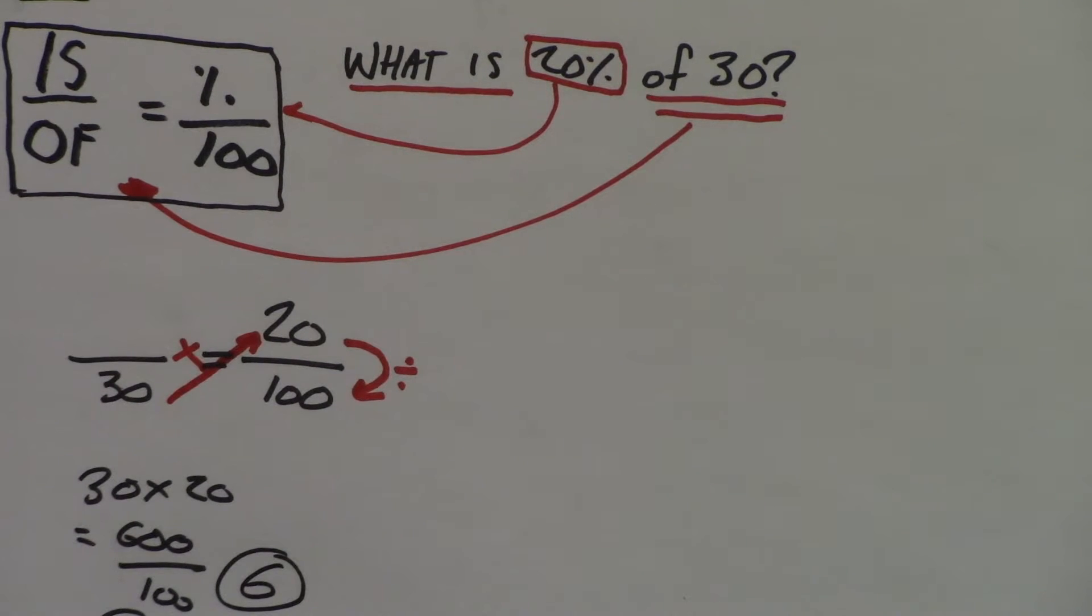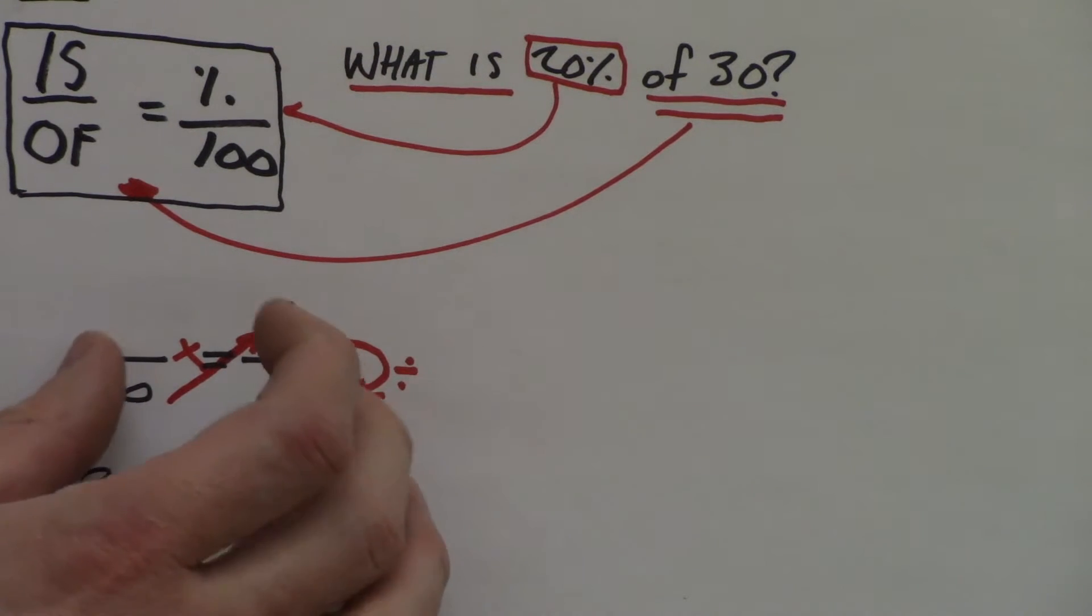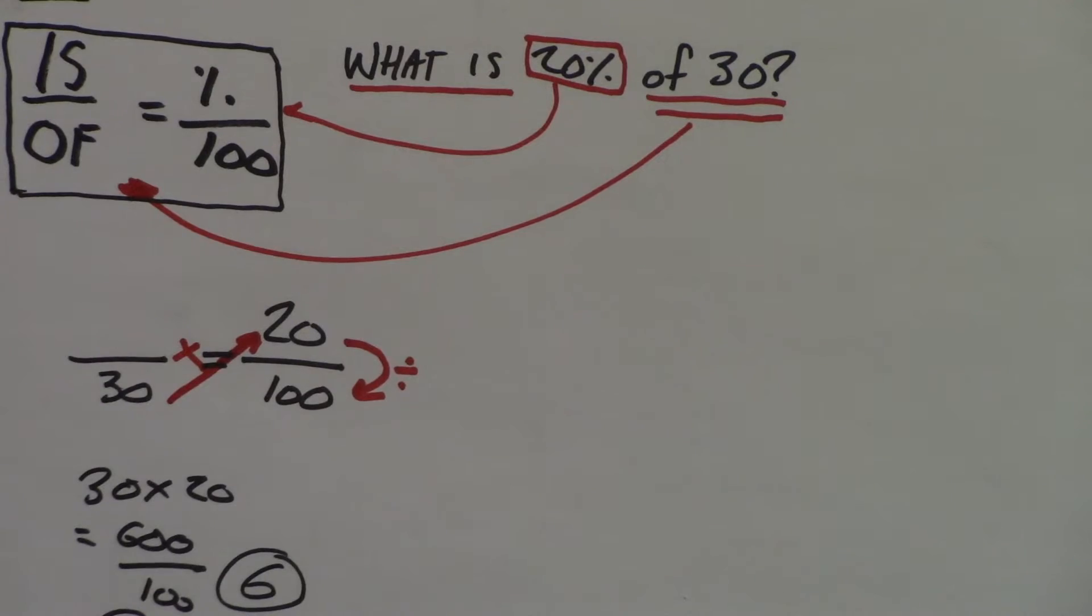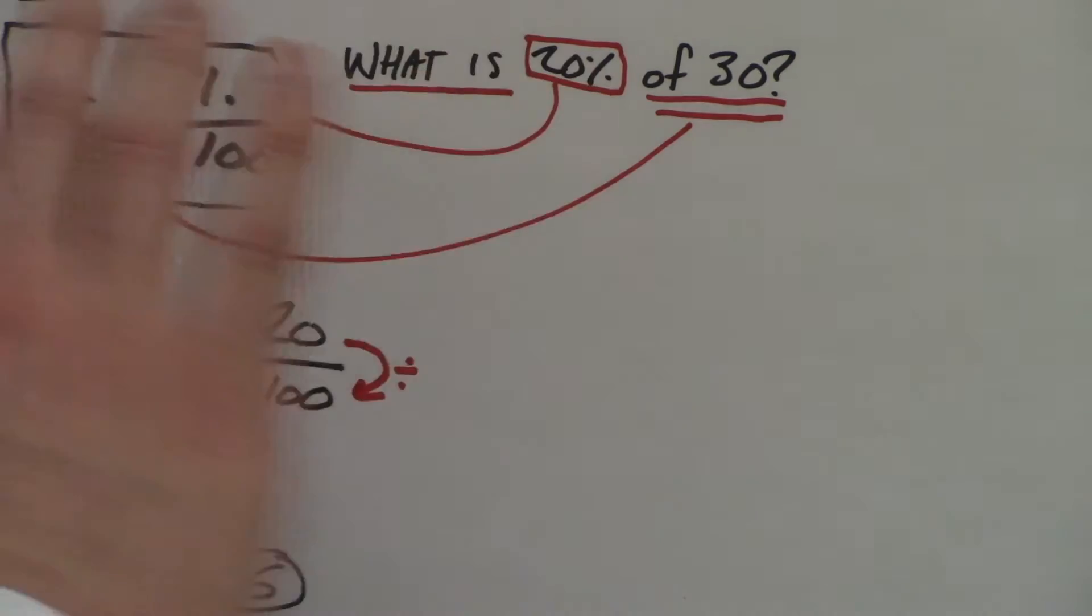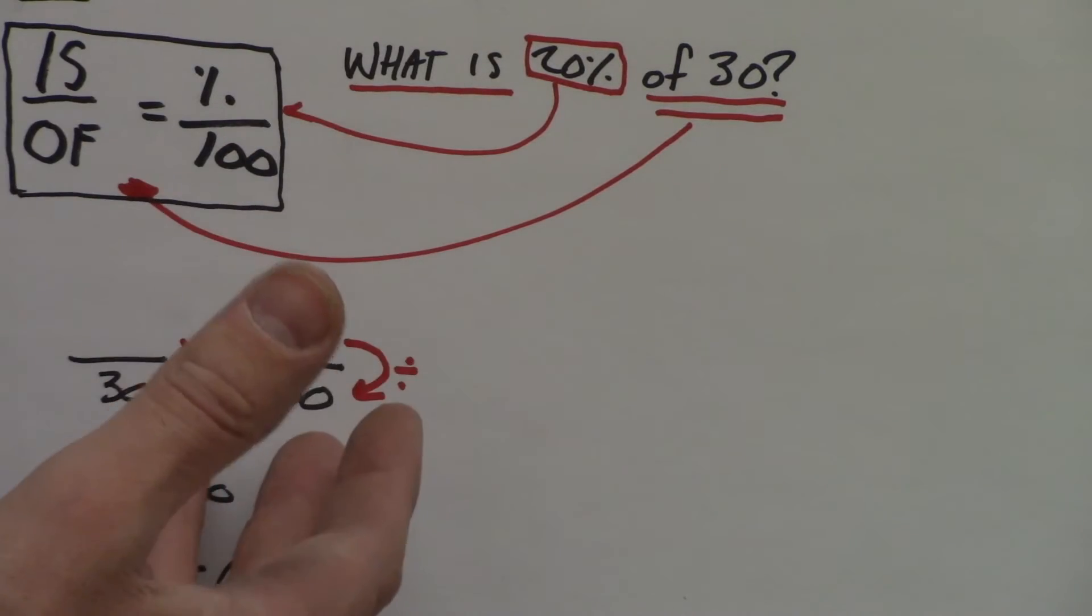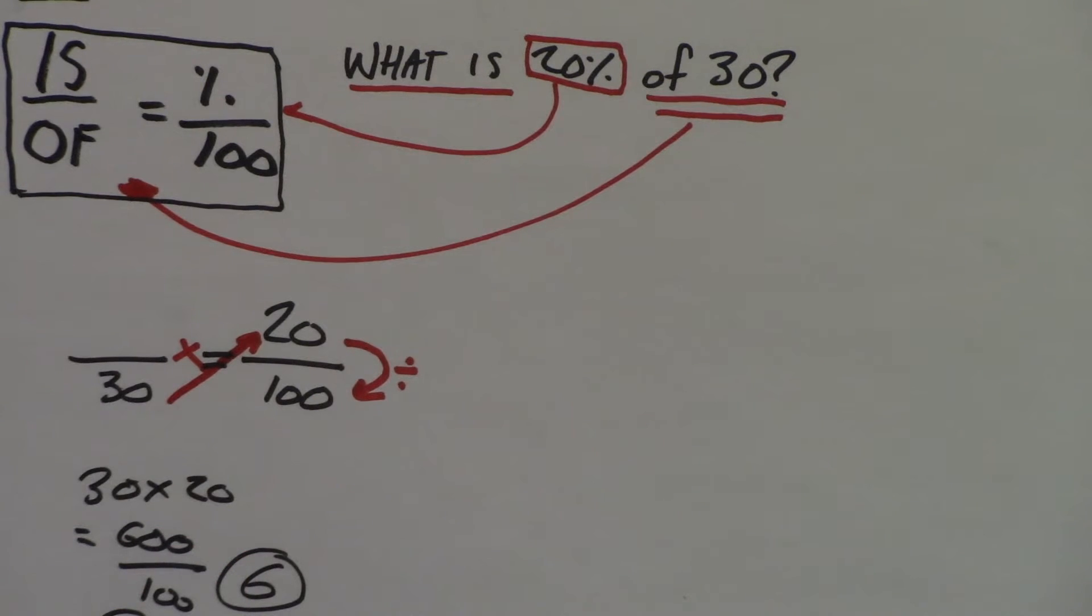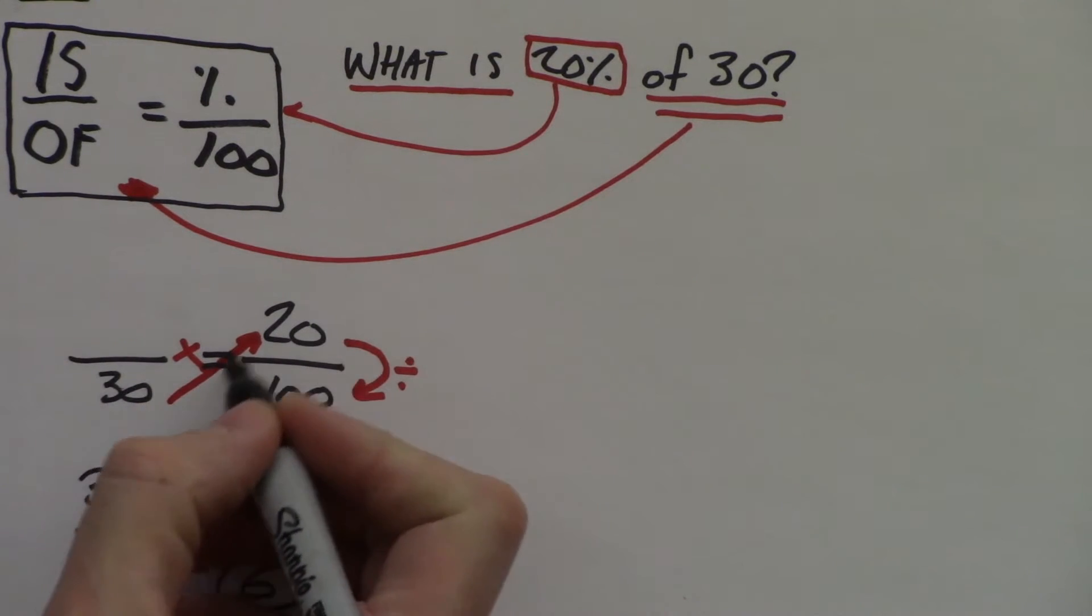But the thing about math that's really confusing is that there are multiple ways of doing the same thing. If this concept is confusing you—cross multiply then divide—once you have these fractions set up, don't think of any other way. Just keep it simple, just do this, it's fine. The thing is, I know my order of operations, which means I can totally divide this first and then multiply by 30.